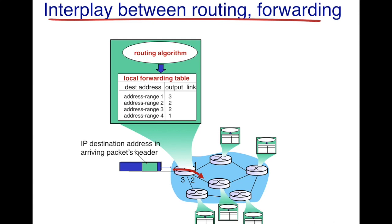Now every node, or the network layer of every node, has two parts. The first part is the routing algorithm and the other is the local forwarding table. Each and every node has this, and I've just blown up one of those nodes to show how the routing algorithm and the forwarding table interact with each other.